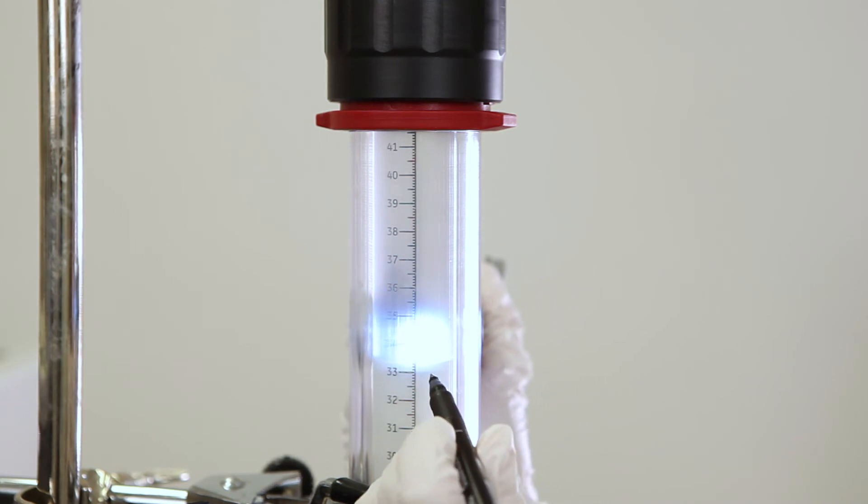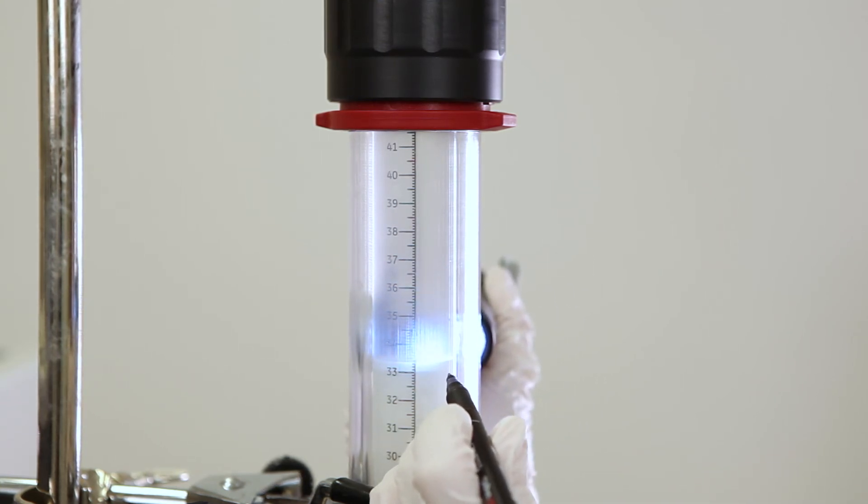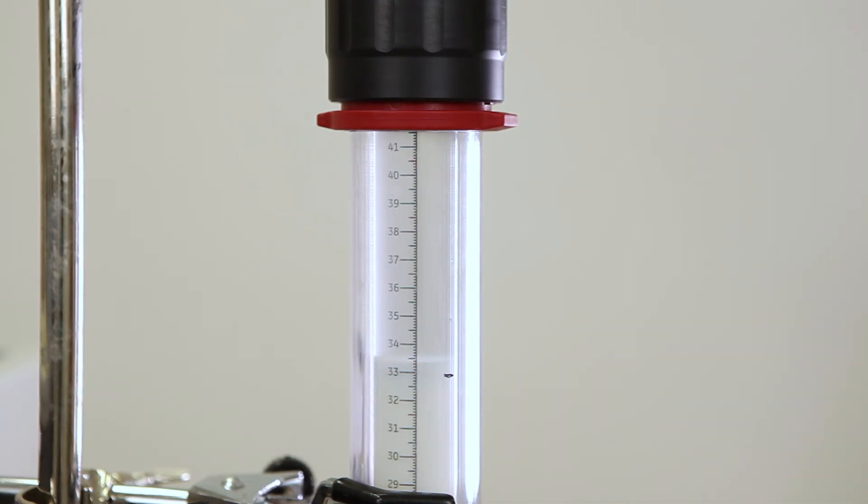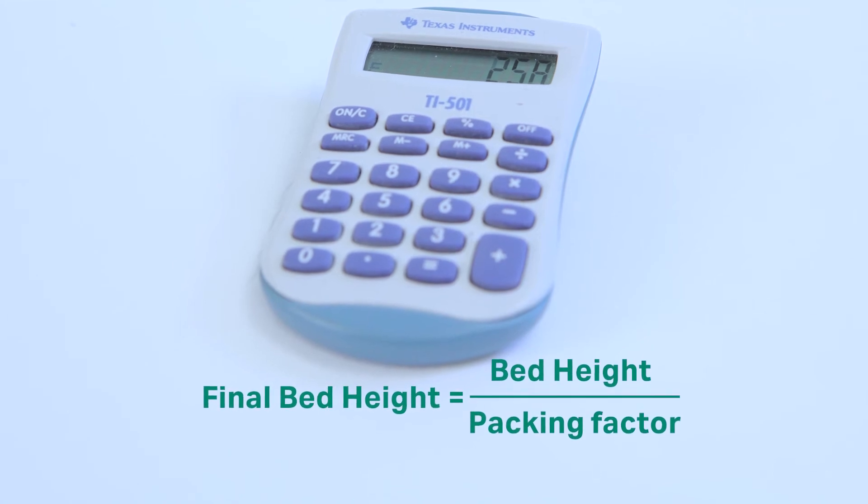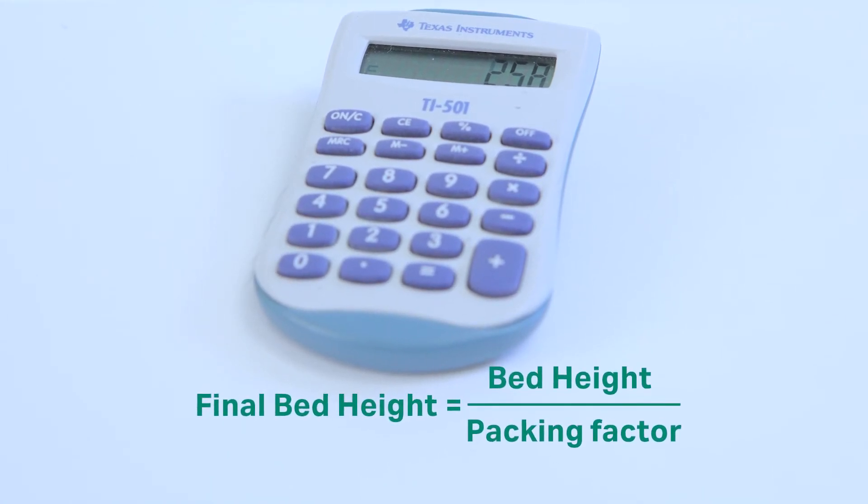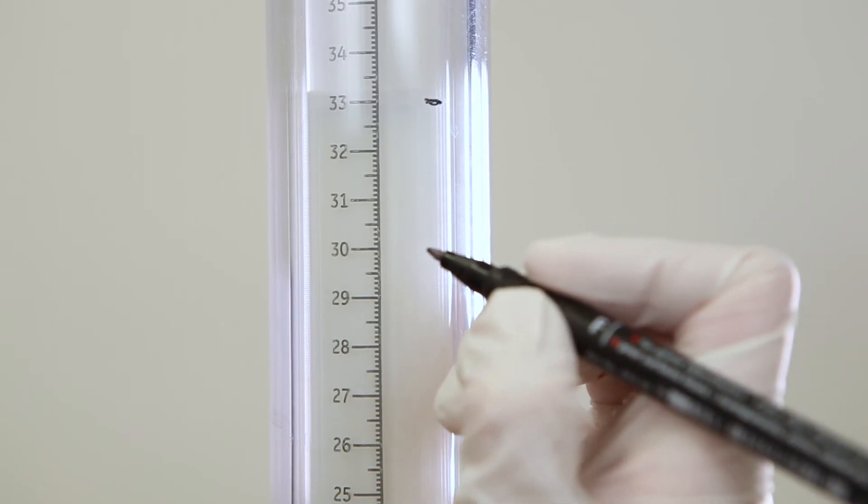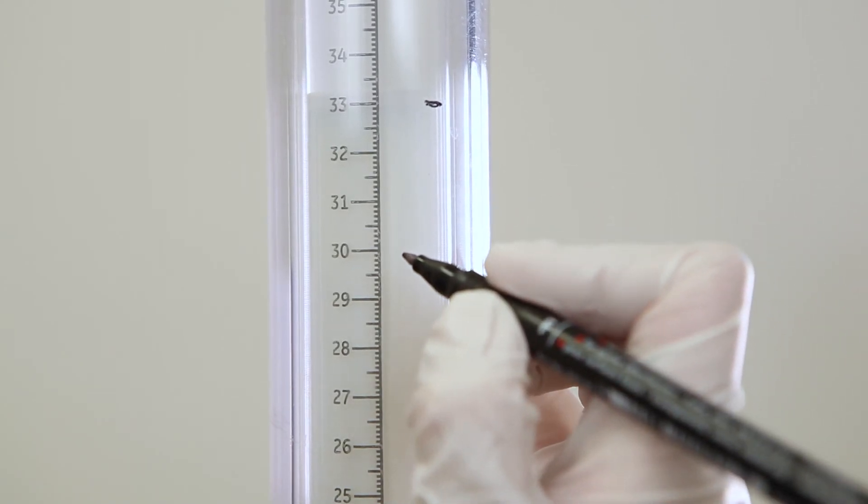High-flow agarose media often needs axial compression after initial flow packing. Therefore, the desired final bed height also needs to be marked. Calculate this final bed height by dividing the actual bed height by the packing factor for the specific media. Mark the final bed height on the column tube.